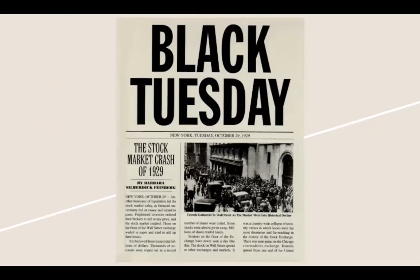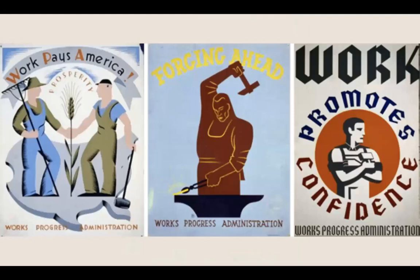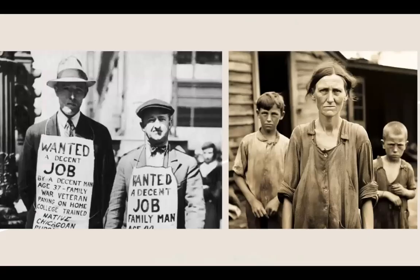Roosevelt's administration also instituted new social legislation that began the US welfare system. The Social Security Act of 1935 created a system of old-age pensions collectible at age 65, unemployment insurance for workers who lost their jobs, and small welfare payments for those in need including people with disabilities. These reforms may have prevented a social revolution in the United States, but they did not solve unemployment. In 1938, unemployment was still more than 10 million people. It was only World War II and the growth of the weapons industry that brought US workers back to full employment.